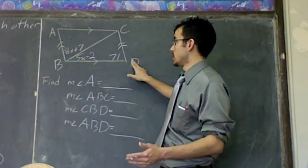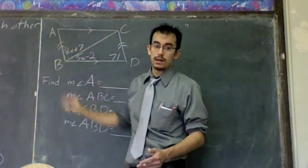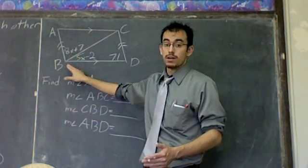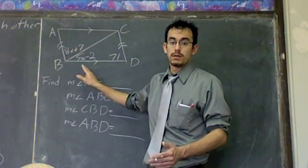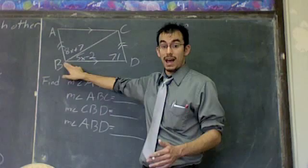You've got this angle DBC and this angle CBA. Well, if we added these together, we'd have all of angle B. So that's what we're going to do. I'm going to add these two angles up so that I have angle B.